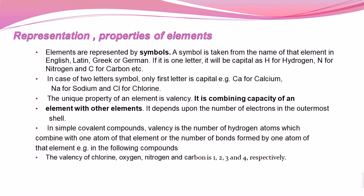Representations of elements: when representing an element, you select a symbol that gives its identity and explains its properties. Symbols come from Latin or German words. A single-letter symbol is always capitalized — H for hydrogen, N for nitrogen, C for carbon. Two-letter symbols have only the first letter capitalized: Ca for calcium, Na for sodium, Cl for chlorine.